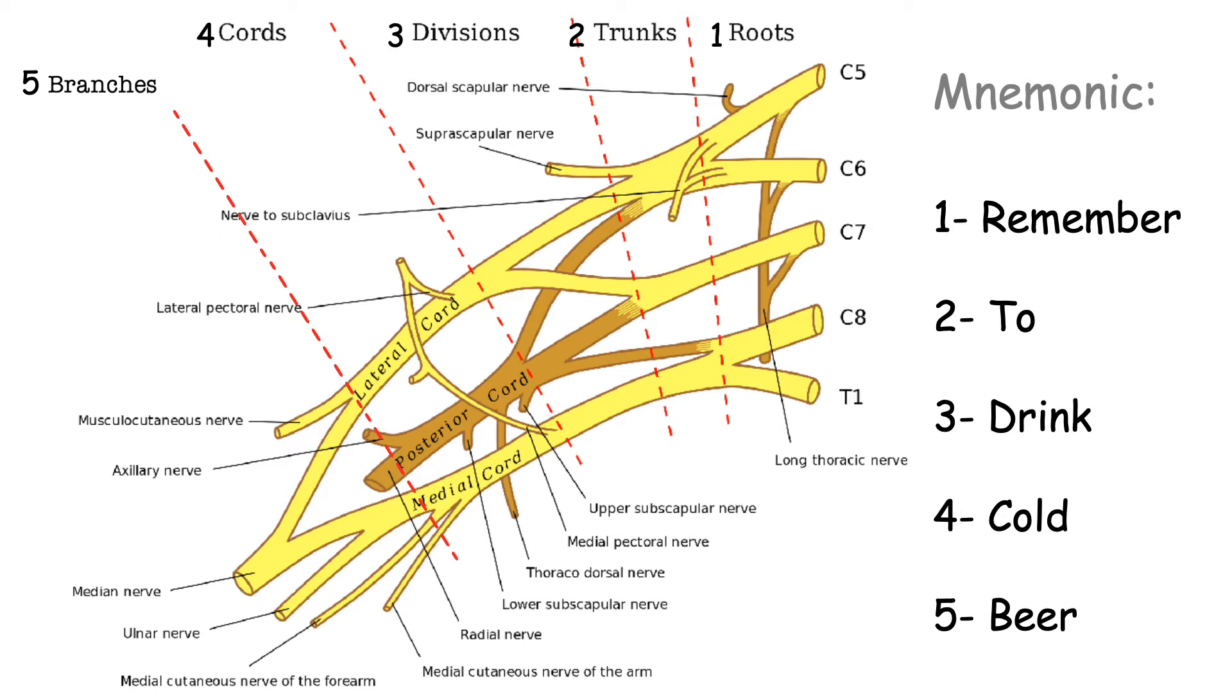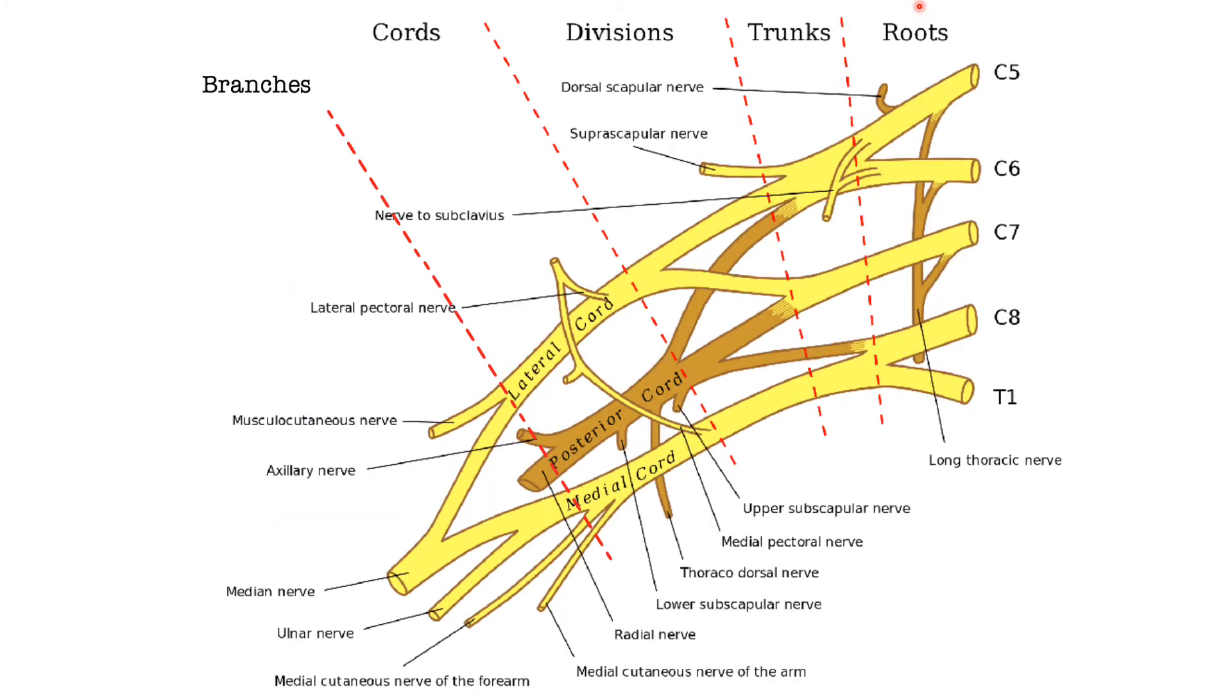So the R in remember is for roots, T for trunks, D for divisions, C for cords and B for branches, which are terminal branches or could also be called terminal nerves. So now let's focus here on each division.